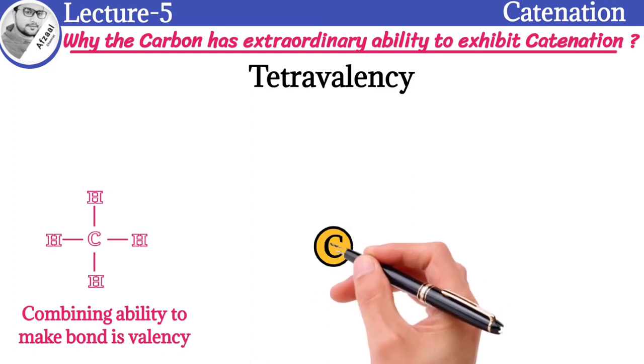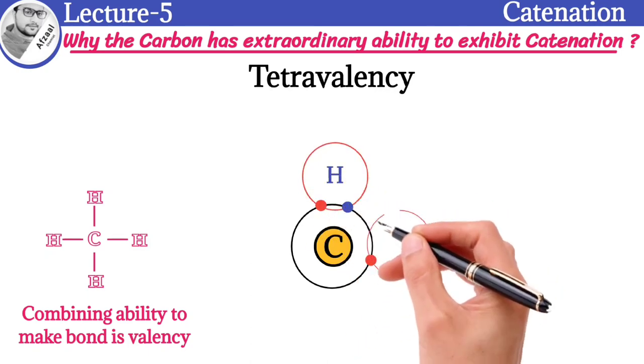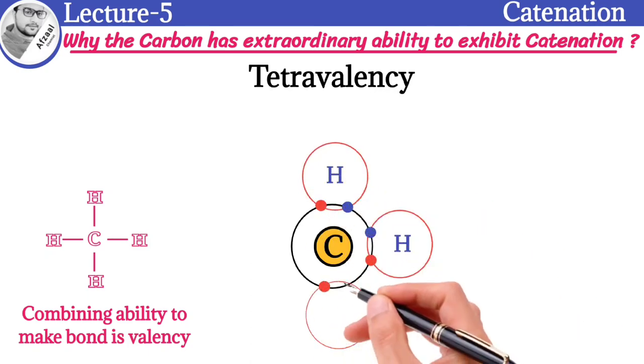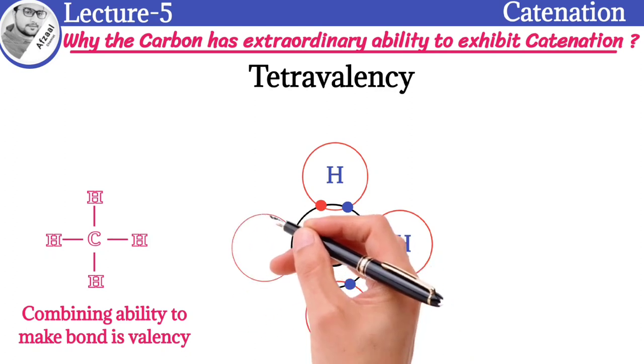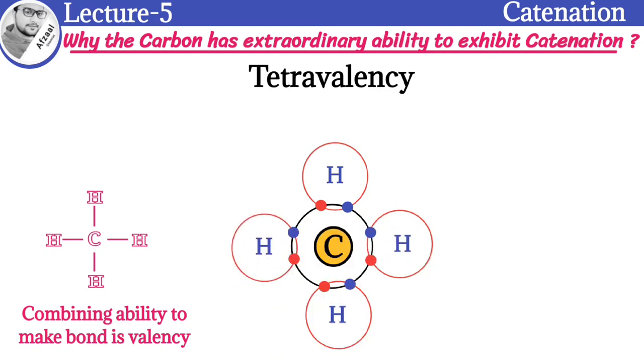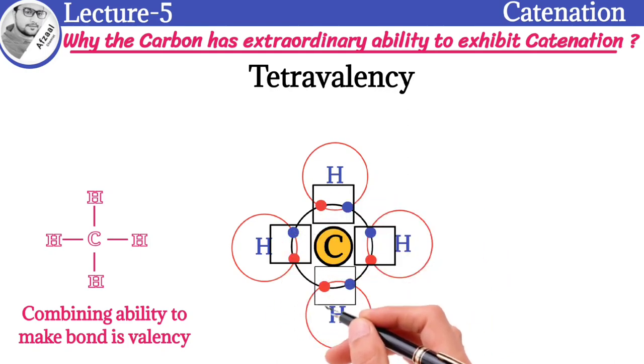When carbon bonds with four other atoms, like hydrogen in methane, each hydrogen atom shares one electron with carbon, and carbon shares one electron with each hydrogen atom. This sharing of electrons completes the valence shell of both carbon and hydrogen, resulting in a stable molecule.